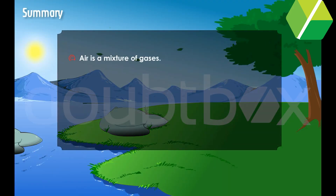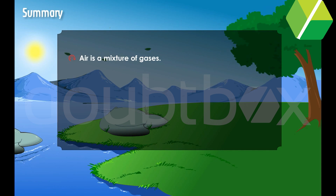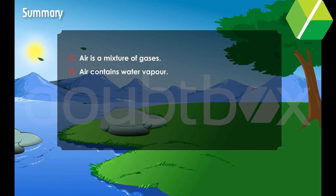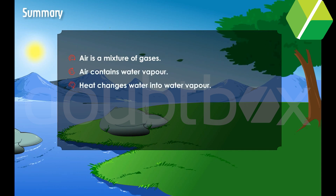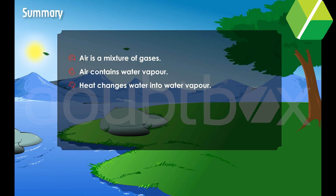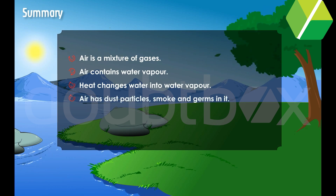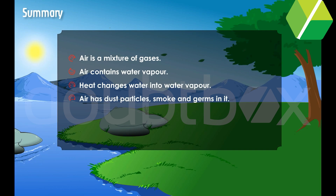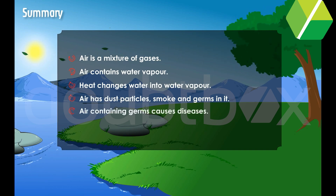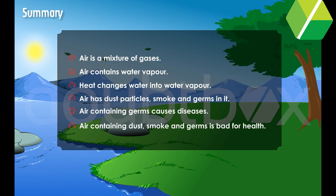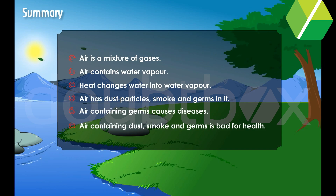To summarize: air is a mixture of gases. Air contains water vapor, as heat changes water into water vapor. Air has dust particles, smoke, and germs in it. Air containing germs causes diseases, and air containing dust, smoke, and germs is bad for our health.